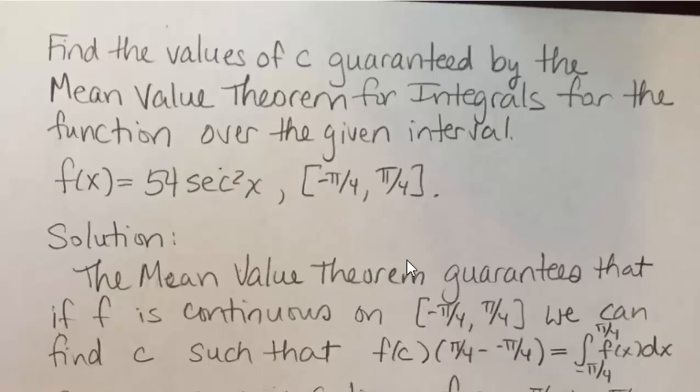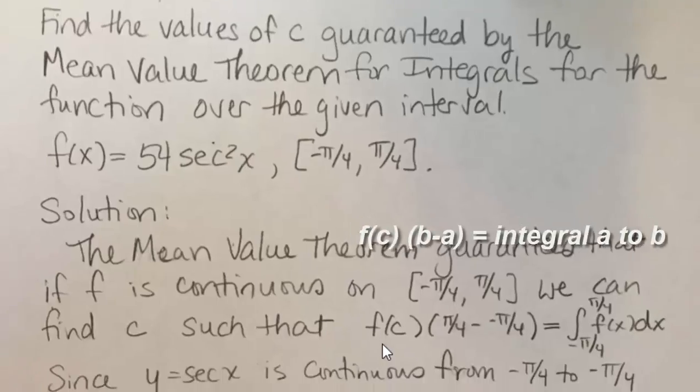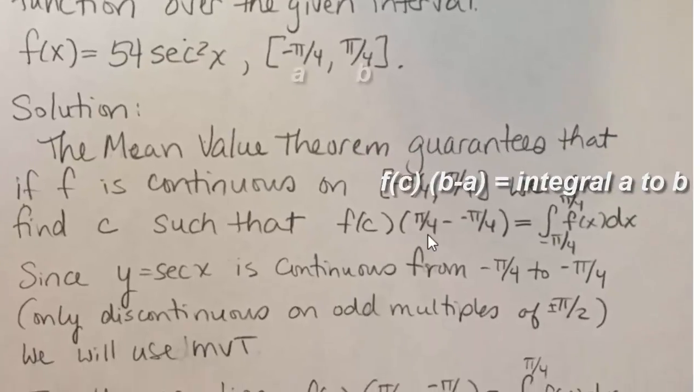And so what happens when you're trying to satisfy the mean value theorem, you're essentially satisfying the equation f of c times b minus a, which is the end of the interval and the beginning of the interval b and a. f of c times b minus a equals the integral from a to b of f of x dx.